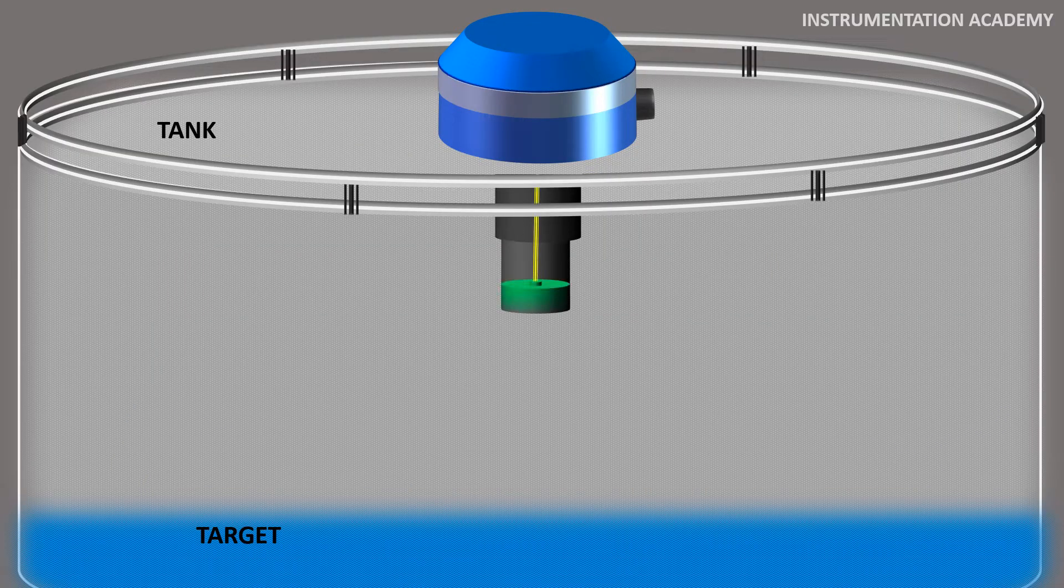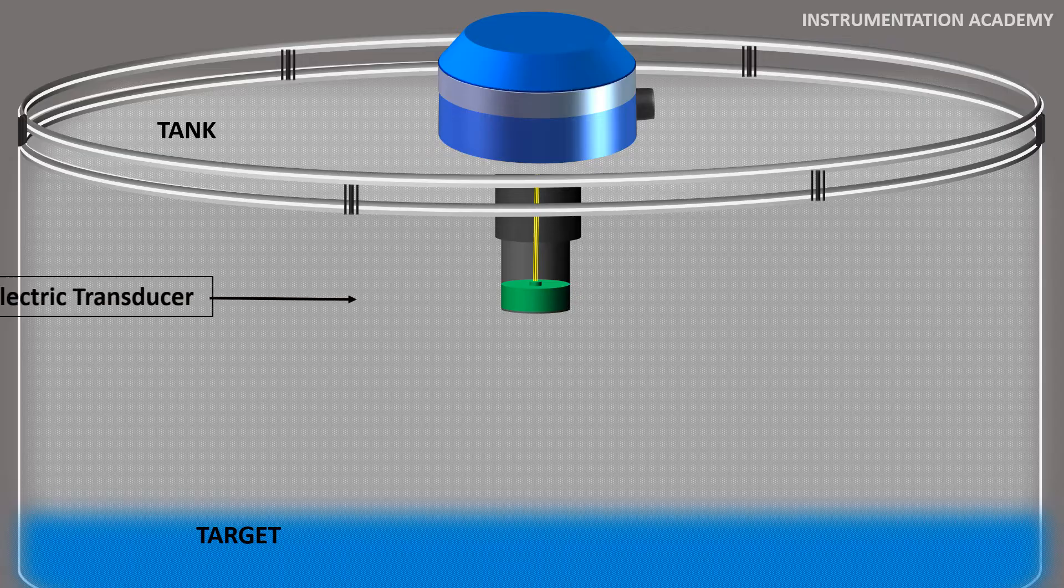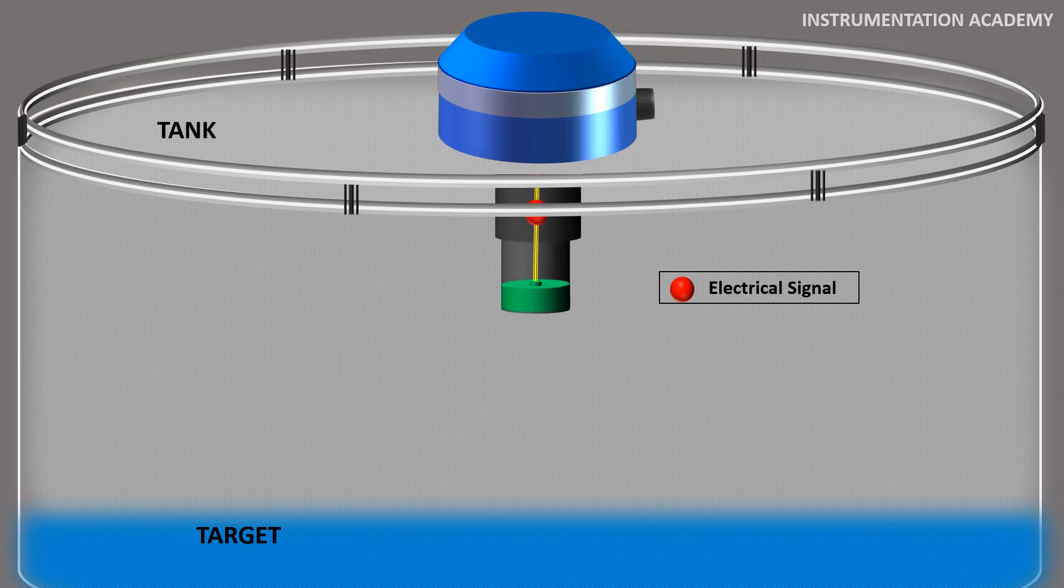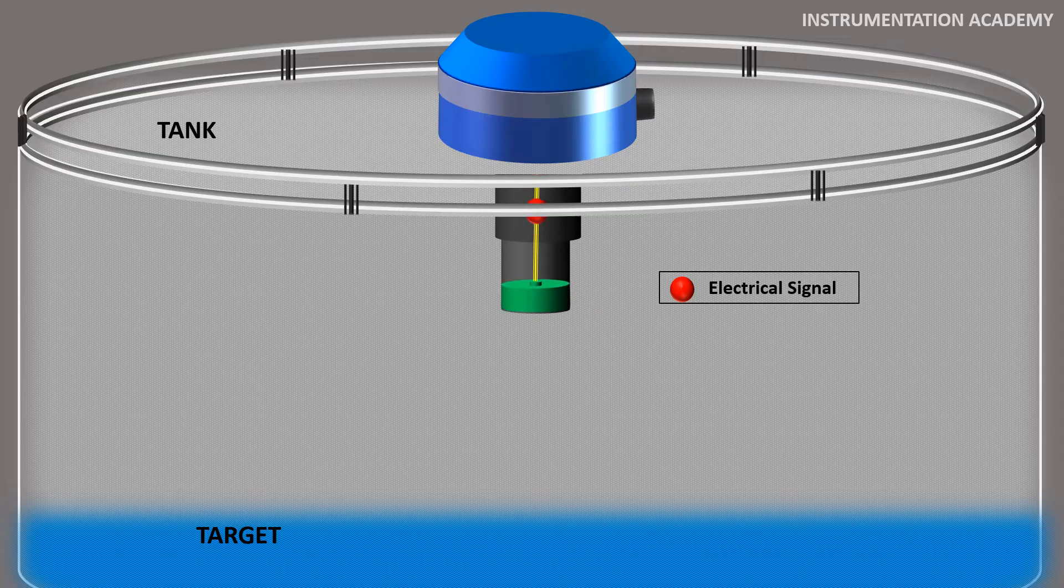The ultrasonic level transmitter consists of a piezoelectric transducer, which vibrates when an electrical signal is fed into it and converts the electrical signal into sound energy. These sound waves are emitted onto the target at a given rate, for example 5 times per second.